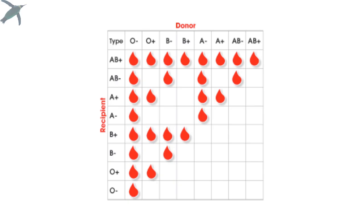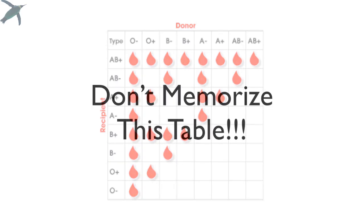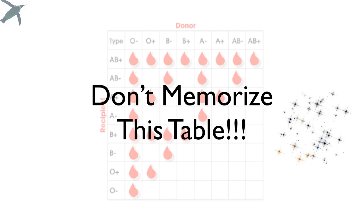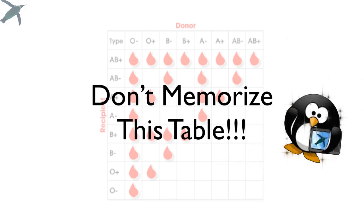Students are totally plagued by these donor-recipient tables and they think that they have to memorize all this. Don't do that. That's what the Penguin Prof is for. We're going to go through what all of this stuff means so that it makes sense to you.